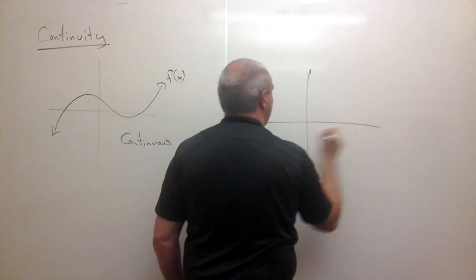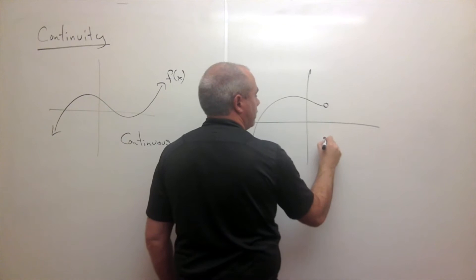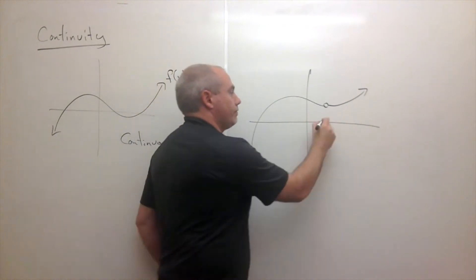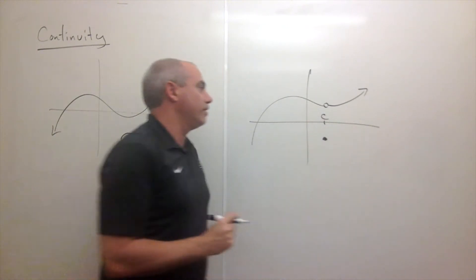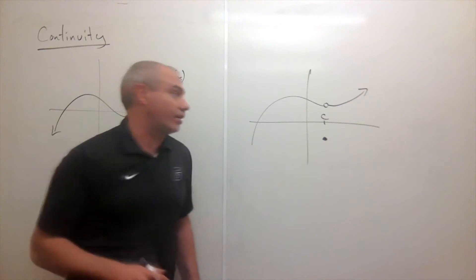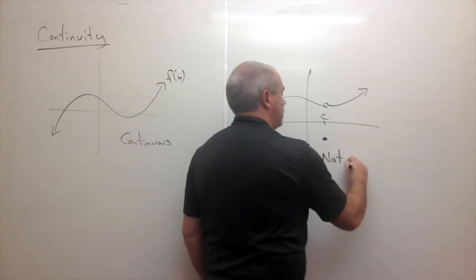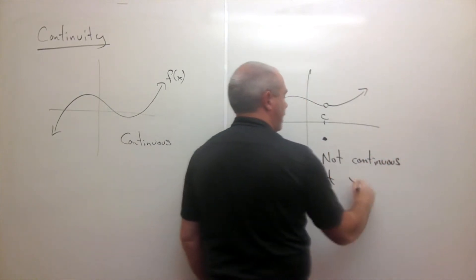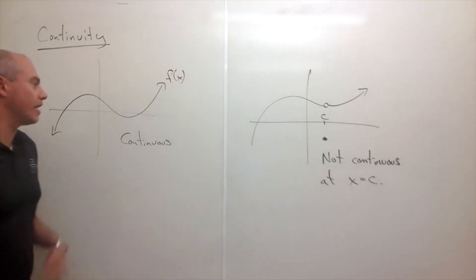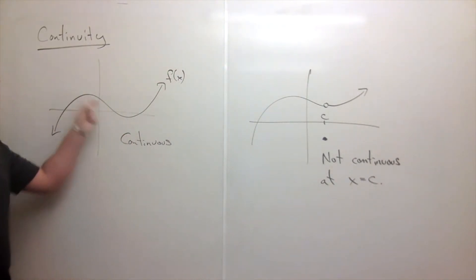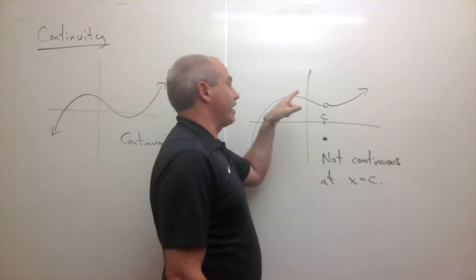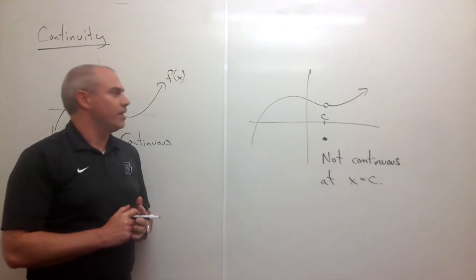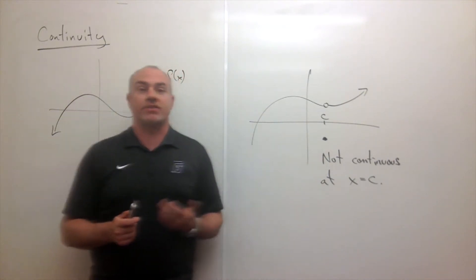Here's an example of a function where maybe I'm going along and all of a sudden there's a hole in the function. At this point — let's call it c — the function is not continuous at x equals c. So this first graph is continuous because I don't have to lift my pen, but here I would have to pick my pen up and put it back down on the other side. This is not continuous at point c.